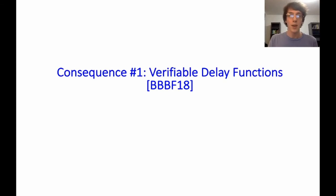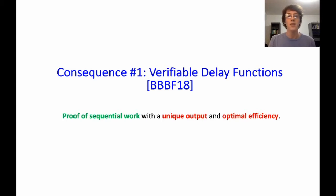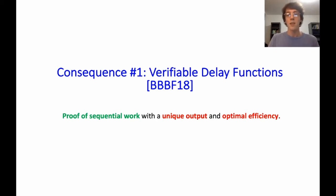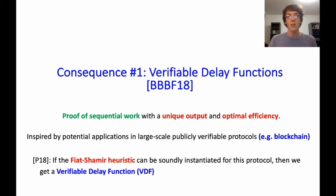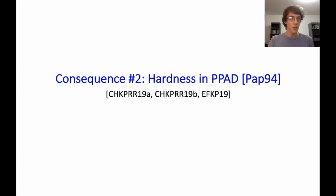From this Fiat-Shamir compiler, we get two cool applications. First, we get a verifiable delay function (VDF) in the standard model. A VDF is a proof of sequential work — a way to prove that you've done some amount of work sequentially, with a unique output, and with close to optimal efficiency: the proof generation time is very close to the time the verifier is convinced you've worked for. This is a primitive inspired by many applications like blockchain.